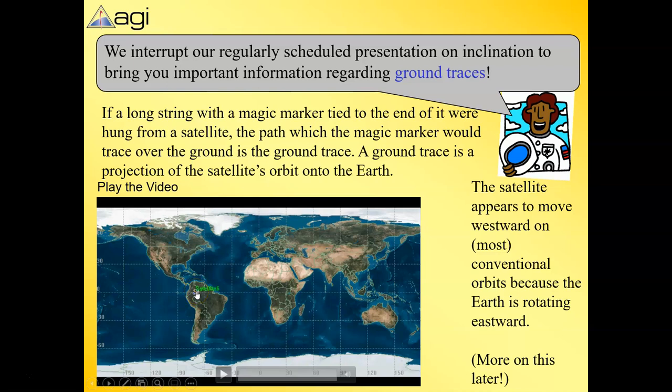If we play the video, it's going to show us what a ground trace is. I always like to think of it as if you had the satellite with a big spotlight shining straight down on Earth, or as it talks about, tying a magic marker with a string. What would that look like? Here's what it would look like in this case.